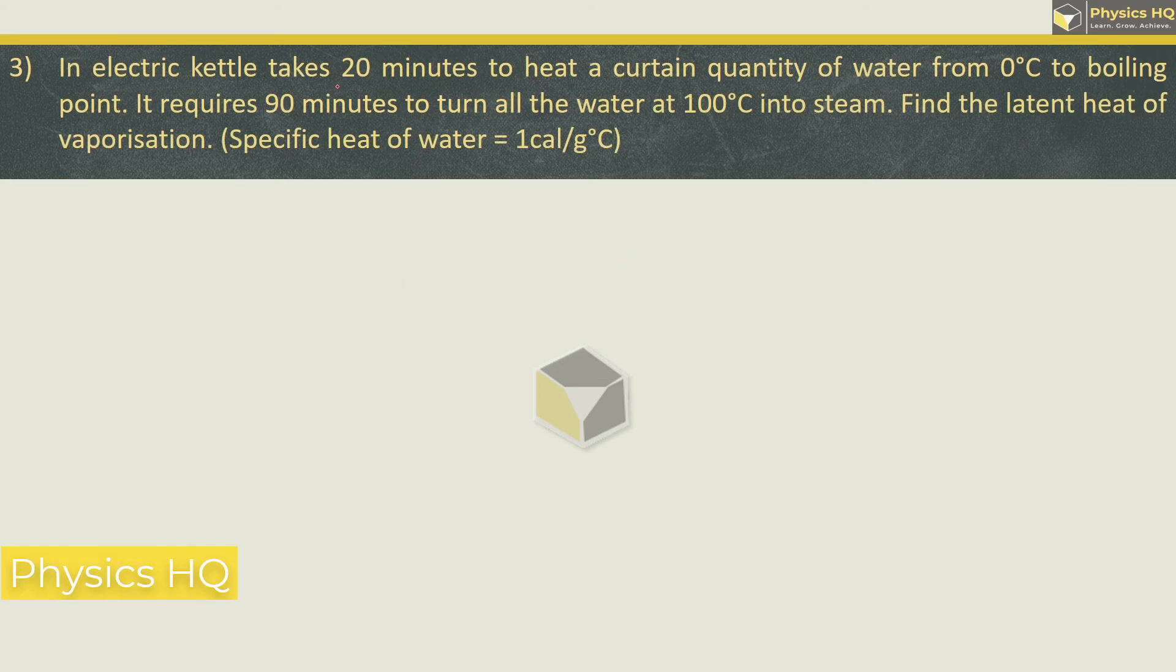In electric kettle, it takes 20 minutes to heat a certain quantity of water from 0 degree Celsius to boiling point. It requires 90 minutes to turn all the water at 100 degree Celsius into steam. Find the latent heat of vaporization. Specific heat of water is 1 calorie per gram per degree Celsius. Now let us say Q1 denotes the amount of heat required to raise the temperature from 0 degree Celsius to 100 degree Celsius.